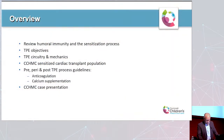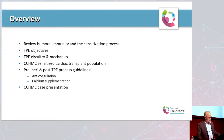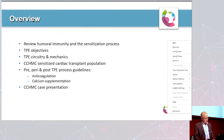The overview for today: I'm going to review the basics of humoral immunity and the sensitization process responsible for organ rejection. I'll touch on some TPE objectives, some TPE circuitry and mechanics, and then we'll take a look at our cardiac transplant population at Cincinnati Children's Hospital, and look at some of our process guidelines for pre-, peri-, and post-TPE with special attention to the anticoagulation and calcium supplementation. I'll finish up with a case presentation of an ABO incompatible heart transplant from last December.